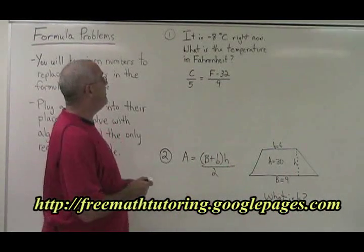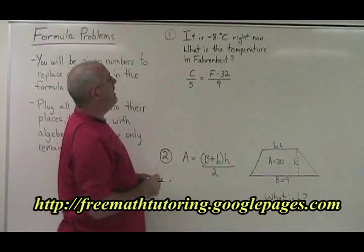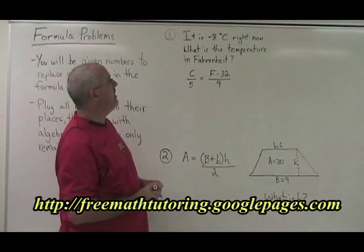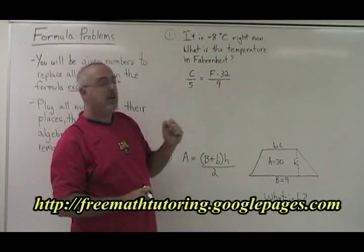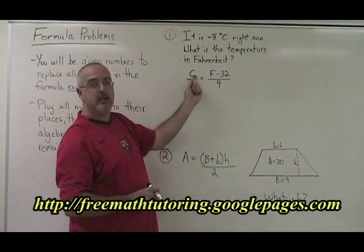In example 1, it is negative 8 degrees Celsius right now. What is the temperature in Fahrenheit? We're given the number negative 8, and it will go in the position of this C in the formula.